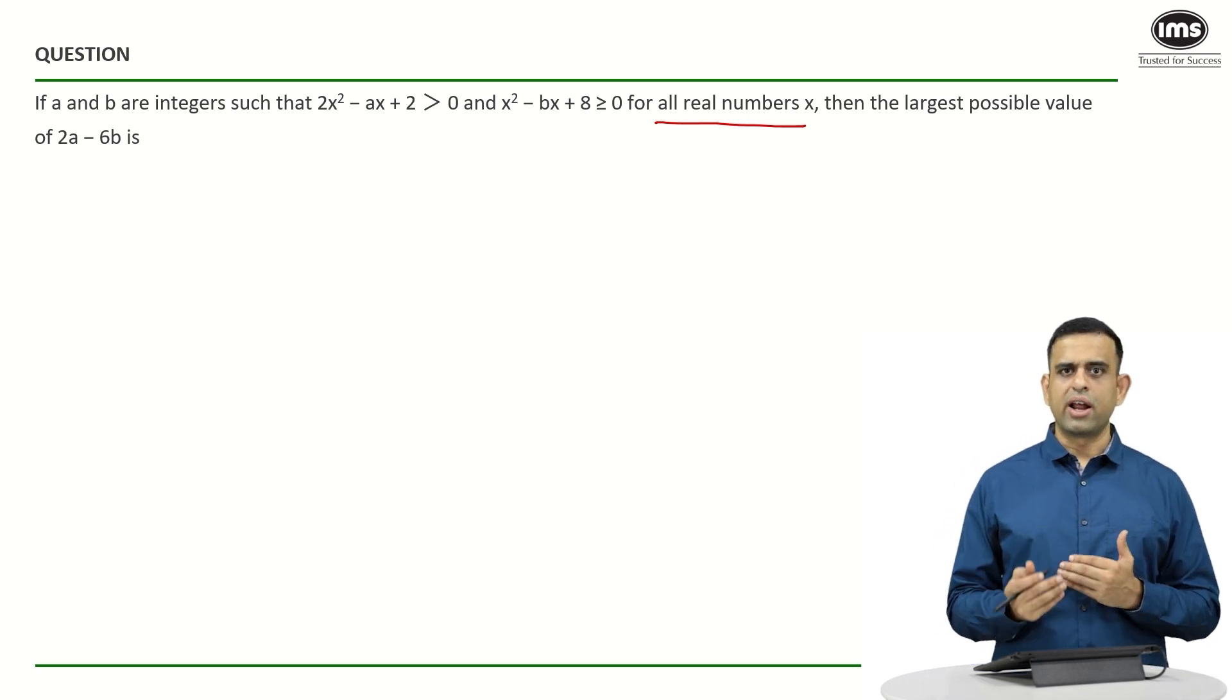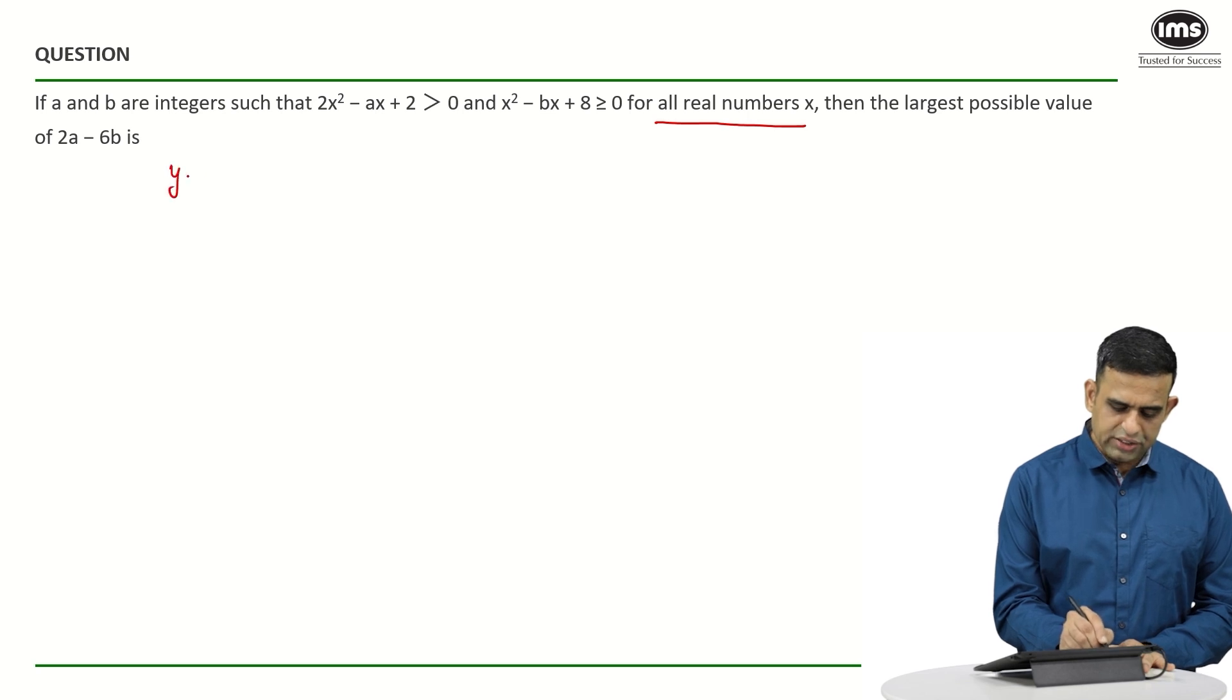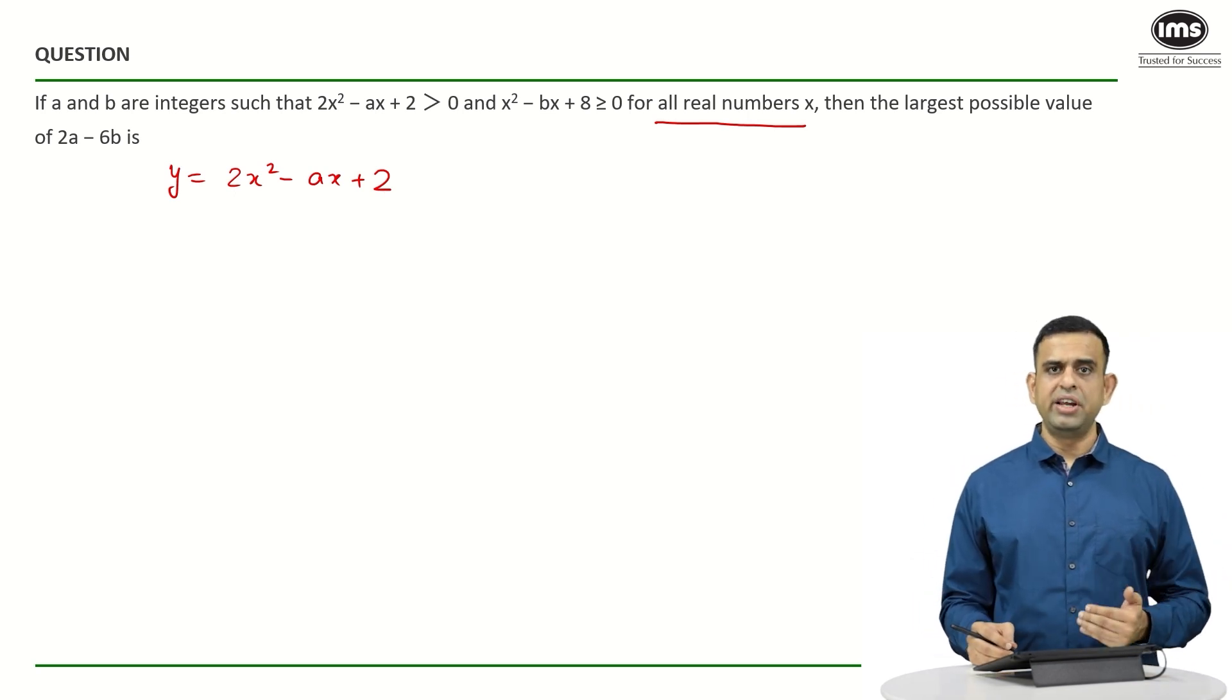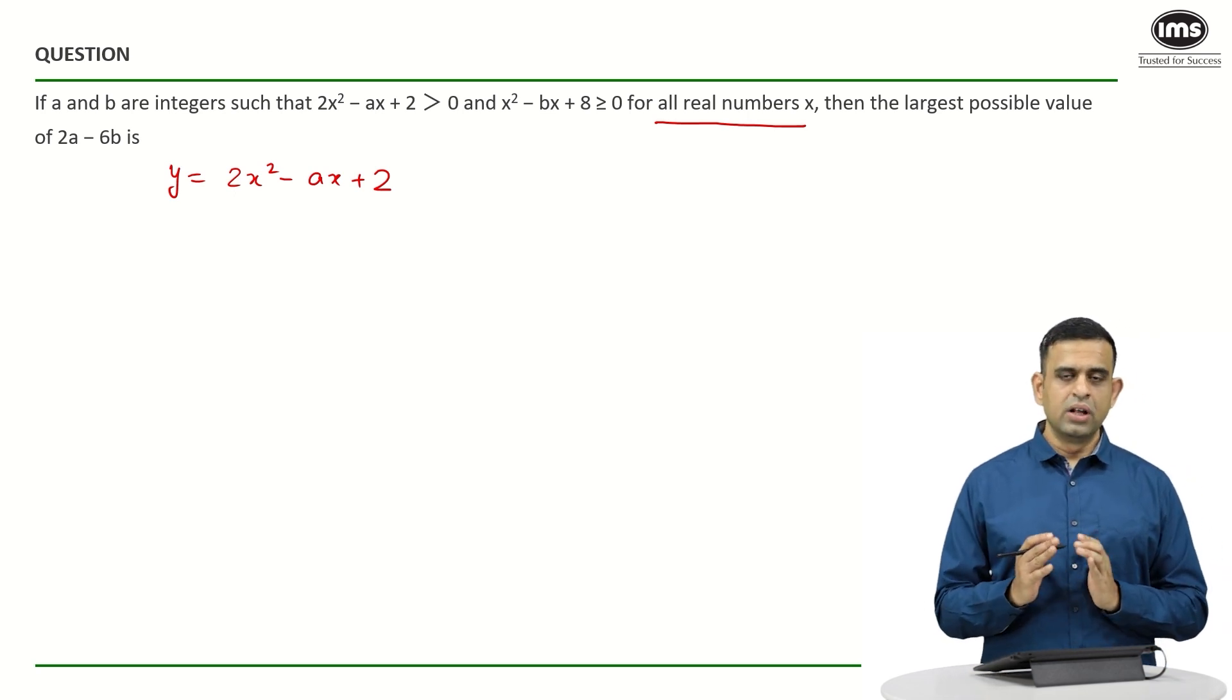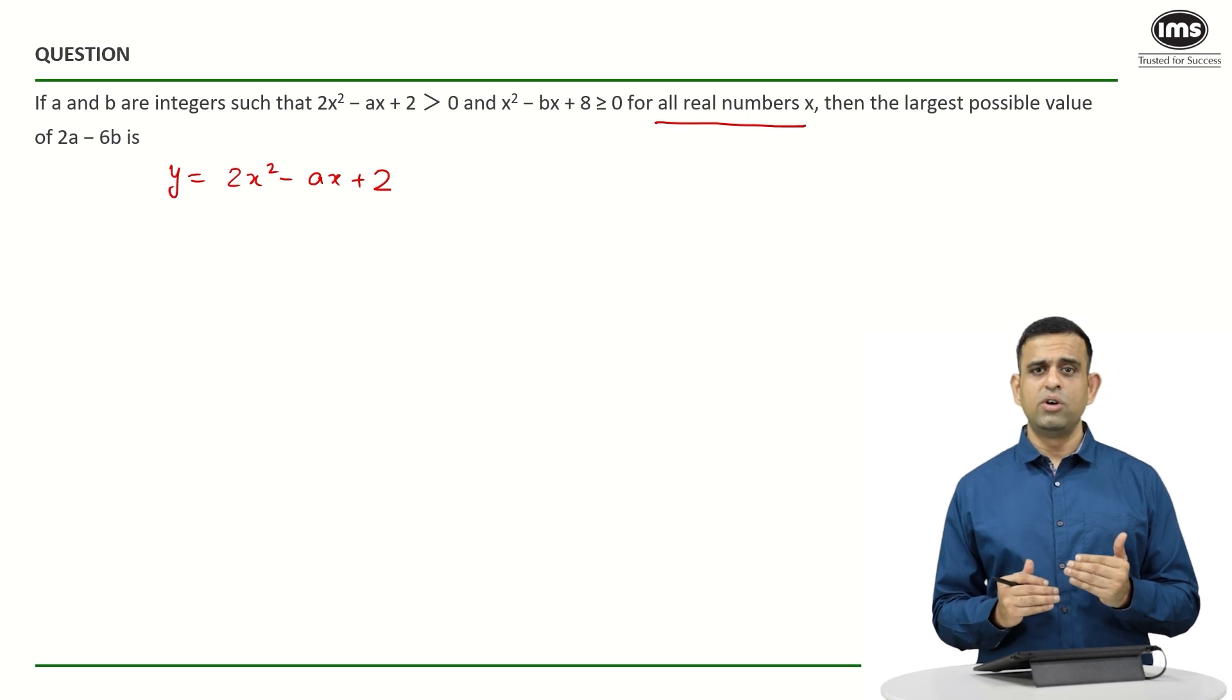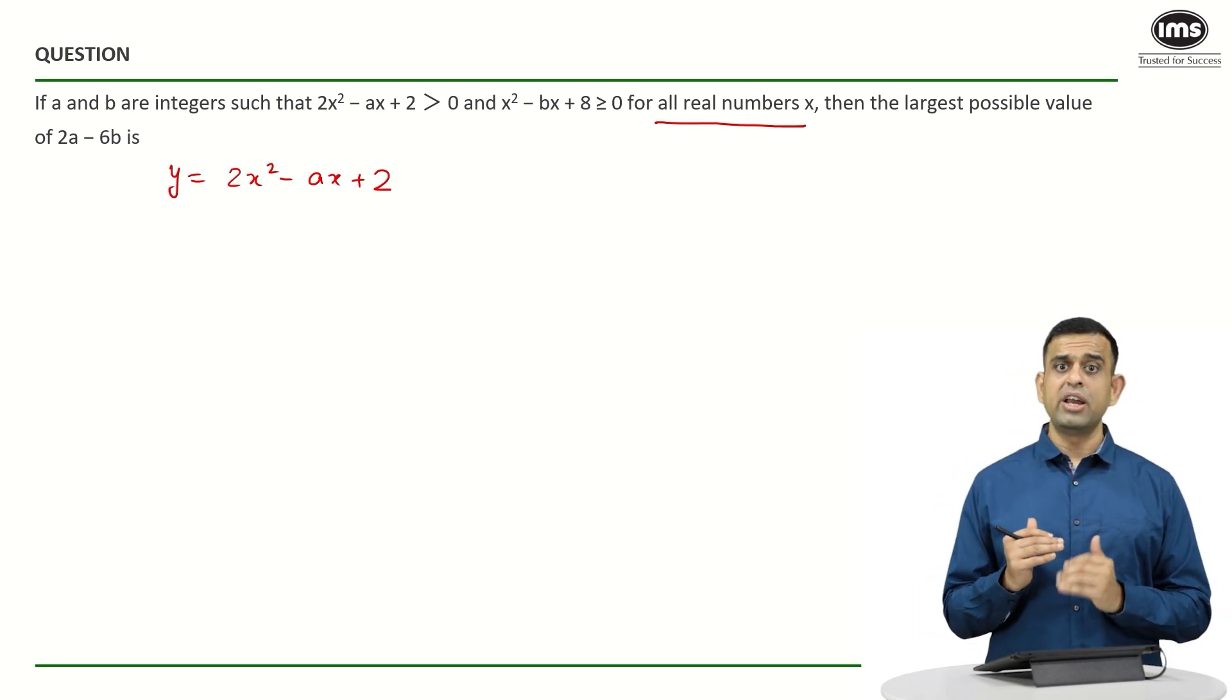Let us see how to tackle this particular question. Suppose if I have taken y equals 2x² - Ax + 2. If I want the term 2x² - Ax + 2 to be positive or more than 0, I basically want the value of y to be positive. Now let us understand how the graph of this particular equation y = 2x² - Ax + 2 might look like before I can make any conclusions.